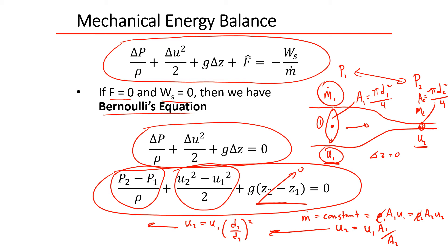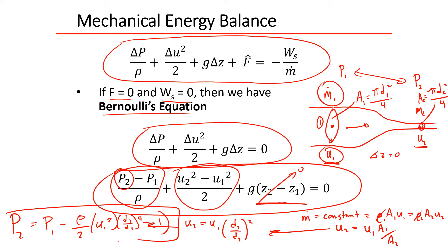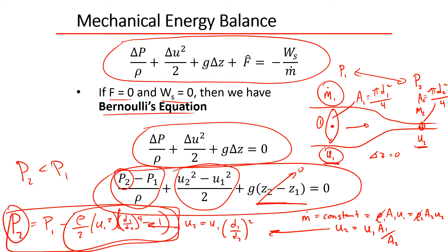Now let's plug in U2 and U1 into the correlation. Knowing U1 and rearranging to solve for P2, we get P2 equals P1 minus rho over 2 times U1 squared times [(D1/D2)⁴ minus 1]. As the diameter decreases, this term is negative, so pressure 2 is going to be less than pressure 1.